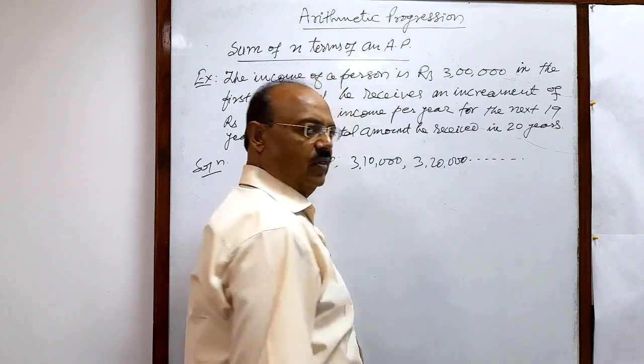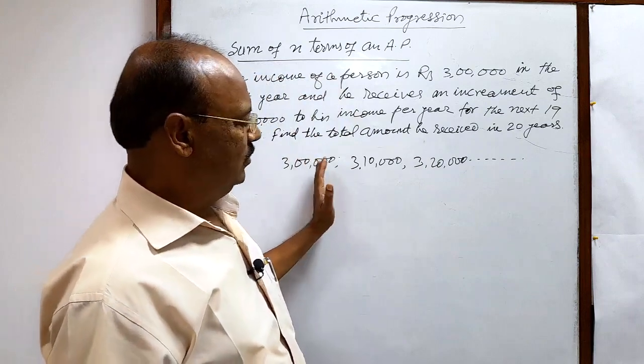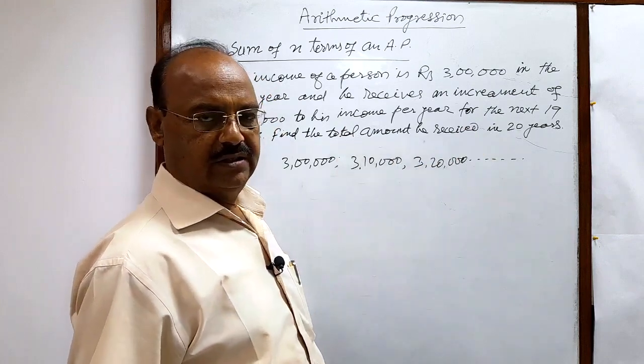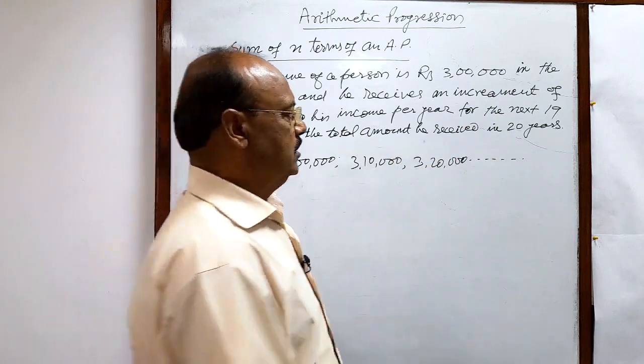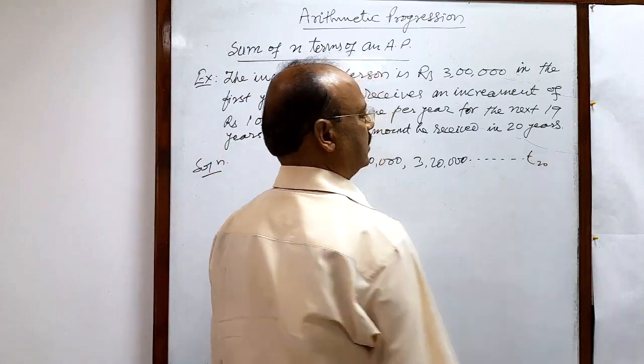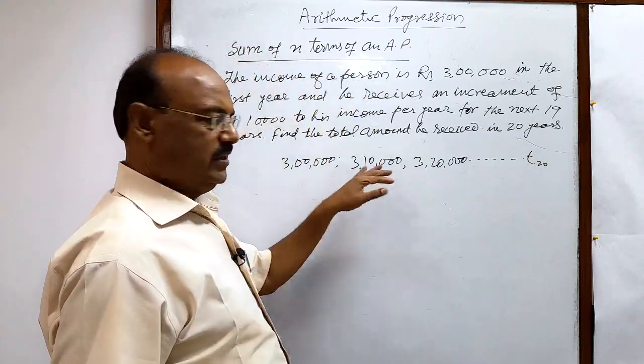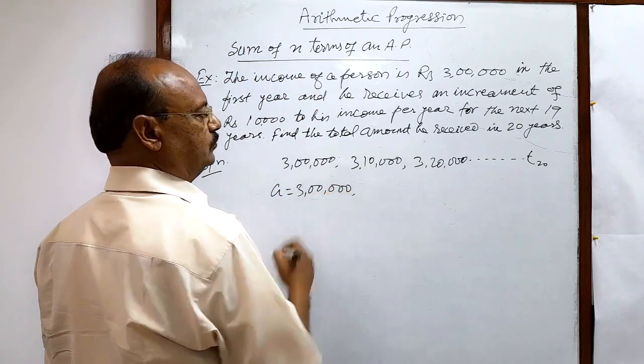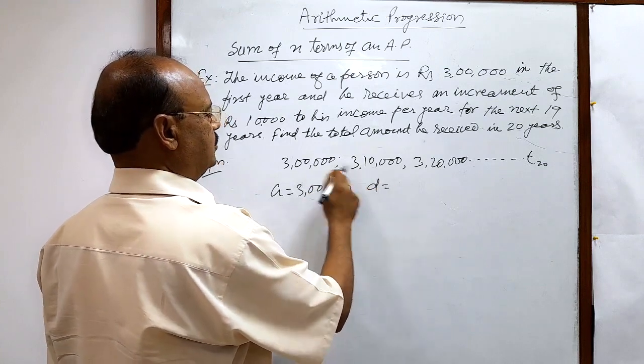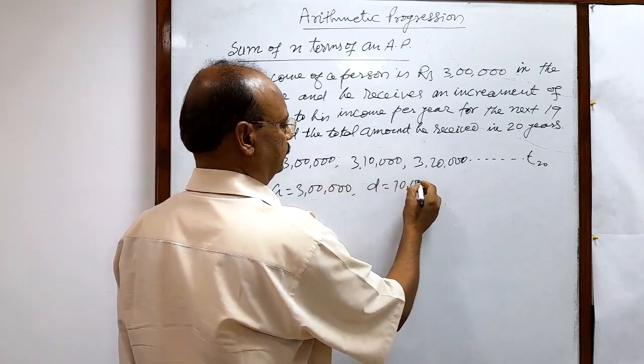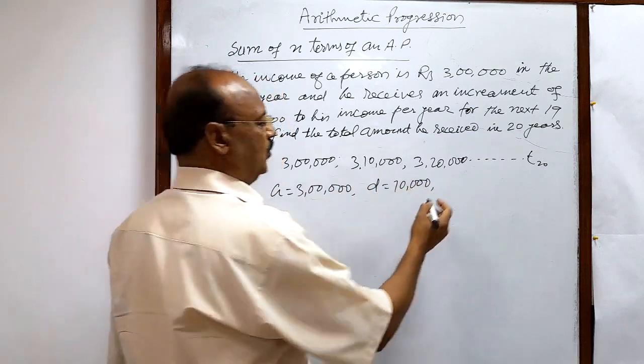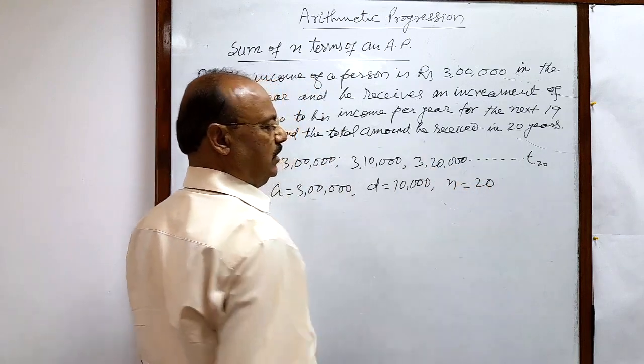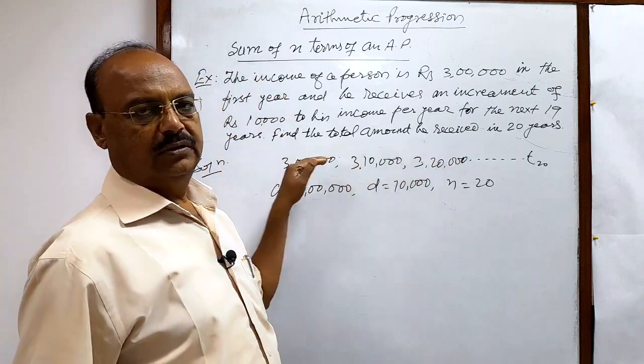In this way we have to find the sum of all these amounts he received in 20 years. So last term is 20 years. For this AP, first term a is 3 lakhs, common difference d is 10,000, and number of terms n is equal to 20. We have to find the sum of all these amounts.